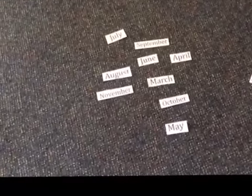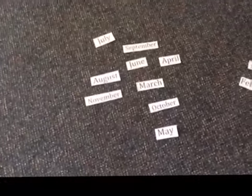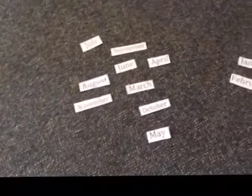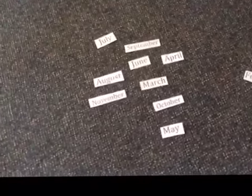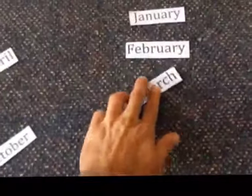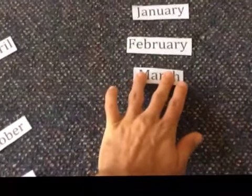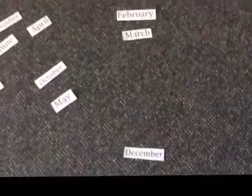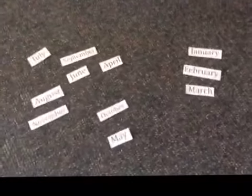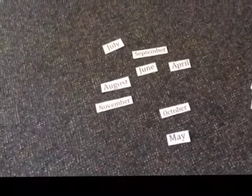What month from our list goes next? January, February... March. Well done. So we'll put March in our list. We now have January, February, March, and then a big gap, then December. January, February, March — which one goes next? Point to it for me, please. April. Well done.